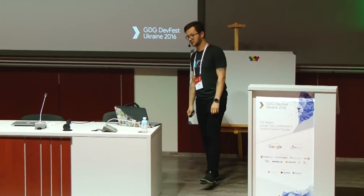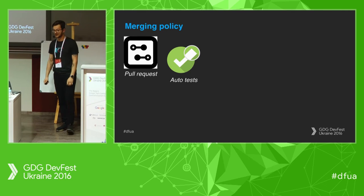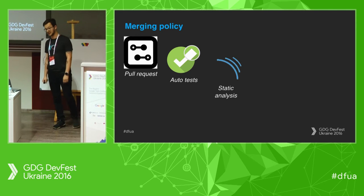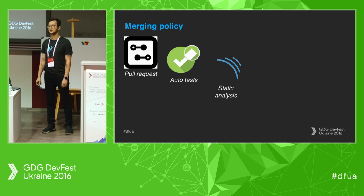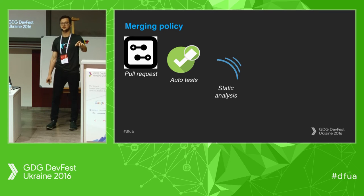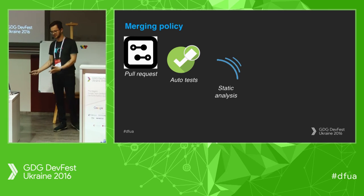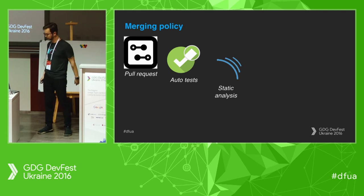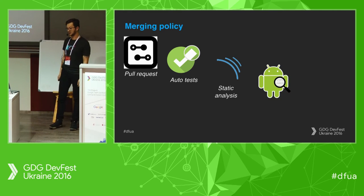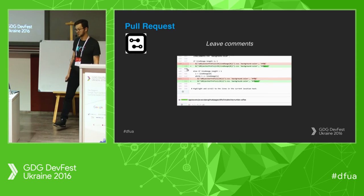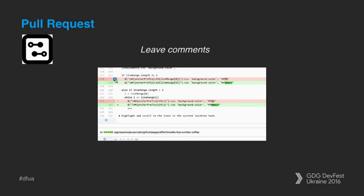Merging policies: first you do a pull request; the pull request should trigger automated tests on your CI machine. After that, you use a static analysis tool — how many of you use Lint in your project without setting it to false in the build config? It's a really cool tool that gives you a lot of information about what's happening with your code. Then you proceed with code review, and after that you can proceed with the merge.